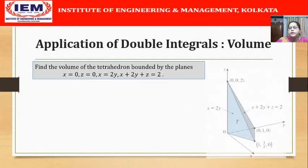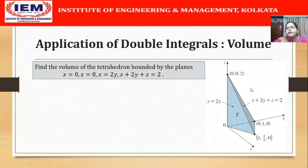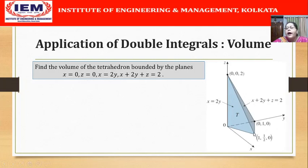Let us draw the tetrahedron first. The four faces of the tetrahedron are given by: x = 0, that means the yz plane — one face is here; z = 0, that means the xy plane — we have the second face on the xy plane; x = 2y — this face cuts the xy plane in the straight line x = 2y; and the fourth face is the plane x + 2y + z = 2, which cuts the xy plane in the straight line x + 2y = 2 (since z = 0 there).